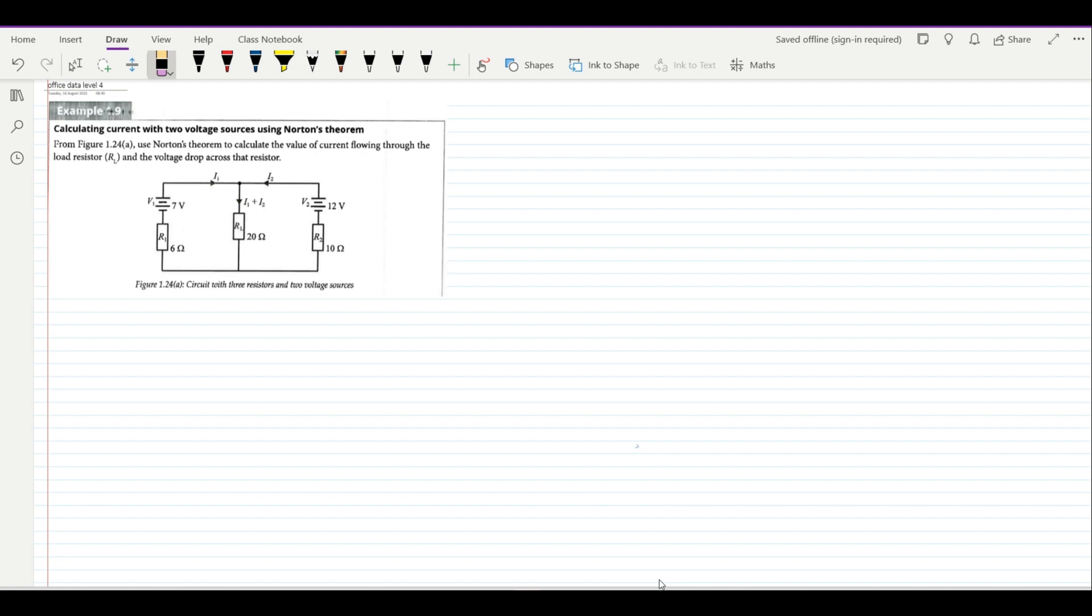With the superposition's theorem, that will assist you to be able to short circuit each voltage source so that we allow the other one to be supplying. And the Thevenin's theorem will assist us to omit the load resistor and mark the terminals A and B.